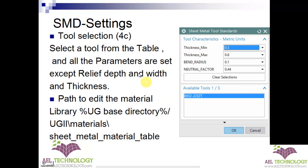Next is tool ID. In a company there is a high possibility that many bending dies are available. Once a tool is available, you can use the tool ID to define the bend radius and angle of that tool. Set this tool as a library entry, and during product development you can extract the tool ID — all the parameters fed in the library will appear. To add a new tool ID, open the sheet metal material table .txt file and enter the tool details.